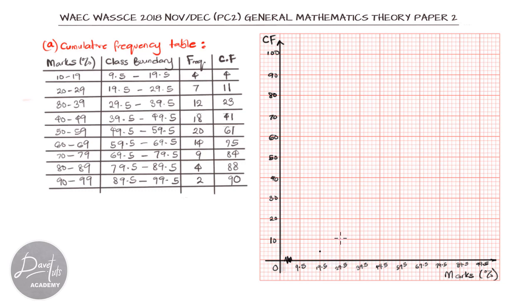The next one will be 11 and 29.5, then 23 and 39.5, then 41 and 49.5, then 61 and 59.5, then 75 and 69.5, 84 and 79.5, then 88 on the vertical axis and 89.5 on the horizontal axis, then finally 90 on vertical axis and 99.5 on the horizontal axis.